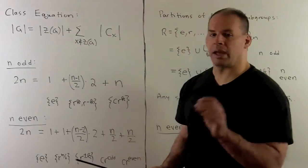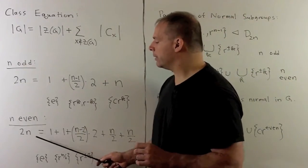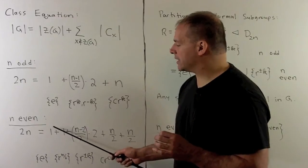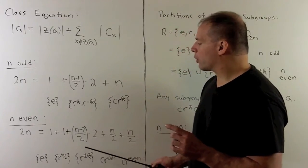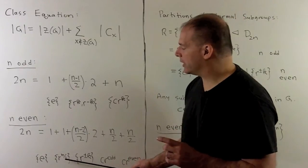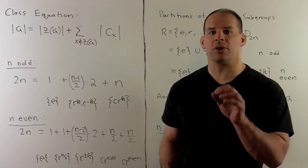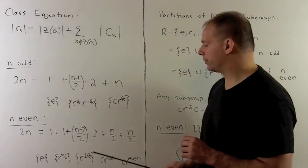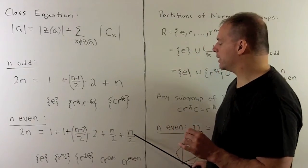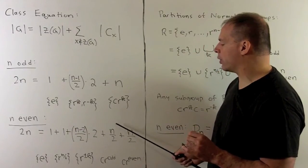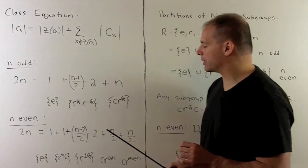When n is even, things are breaking up all over the place. We have 2n. We have one element for the identity, one for the other element in the center. For the rotations, we're taking away these two, so I have n minus 2 divided by 2. That's the number of classes, and there's 2 in each class. Then, for the reflections, they split evenly into two classes, so we get n over 2, n over 2. We add this up, we get 2n as promised.